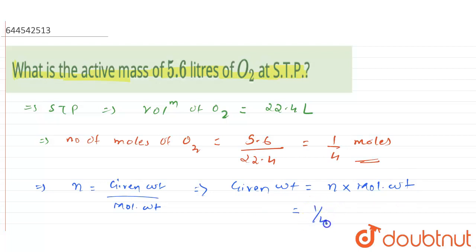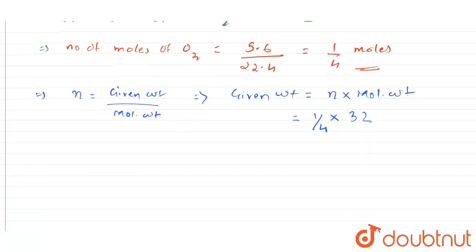And n is given as 1/4. So 1/4 × molecular weight, that is 32, will give me the value as 8 grams. So the active mass for this question will be 8 grams. Thank you. For class 6 to 12...